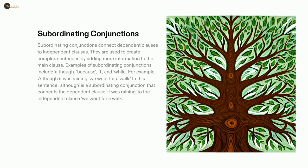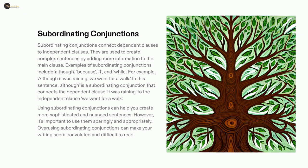Subordinating conjunctions can give our sentences more meaning and nuance, but we should use them cautiously so that the sentences don't become too complicated or hard to understand. For instance, 'although it was raining, we went for a walk'.